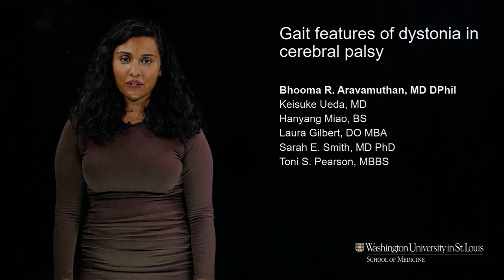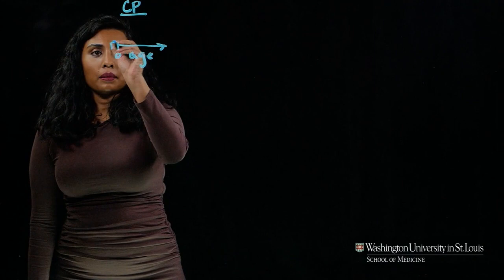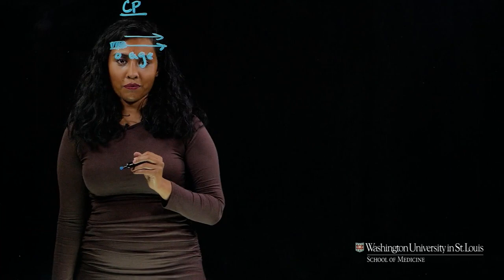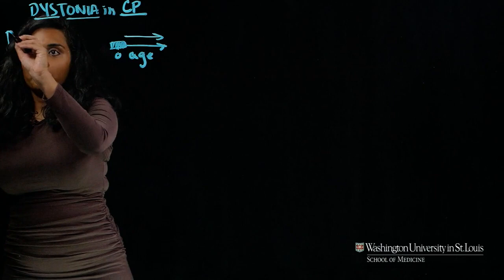CP, or cerebral palsy, is a lifelong movement disorder that's characterized by a disturbance in the developing brain that leads to a persistent, non-progressive motor disability. And dystonia in CP literally means abnormal tone, and is formally defined as voluntary movement triggered overflow muscle activation.